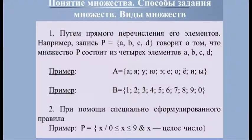Второй способ — при помощи специально сформулированного правила или свойства, в соответствии с которым всякий объект либо входит в множество, либо не входит. Такое правило называется формой П(x). Например, множество десятичных цифр можно задать: П = {x | x ≥ 0 и x ≤ 9 и x — целое число}. Слева от наклонной черты записана переменная x, а справа — правило, указывающее, какие значения x принадлежат множеству П.